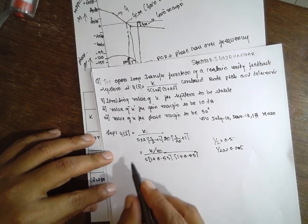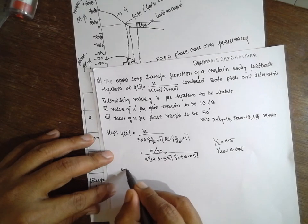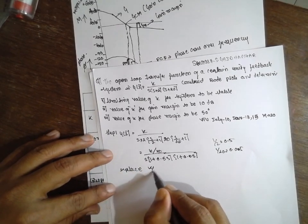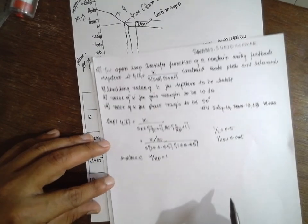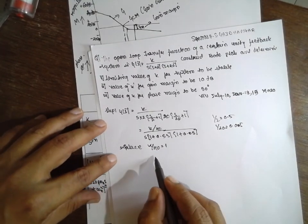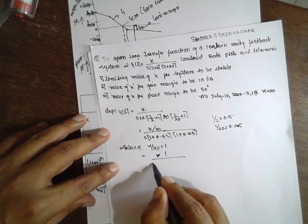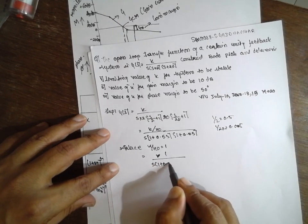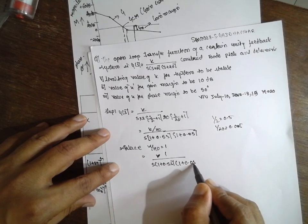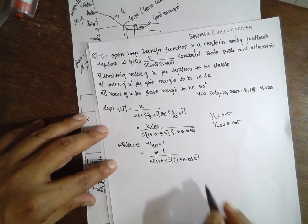Now I will replace K/40 equal to 1. After substituting, this expression becomes 1 divided by s, times (1 plus 0.5s), times (1 plus 0.05s). So we normalize with K/40 = 1.